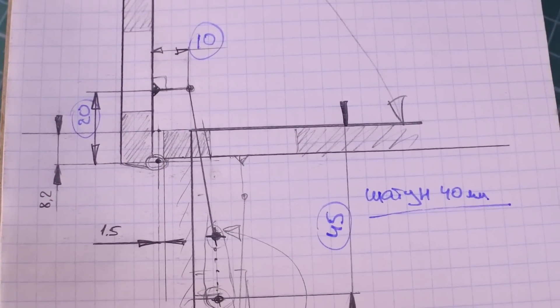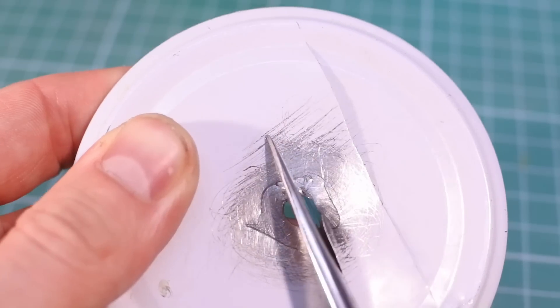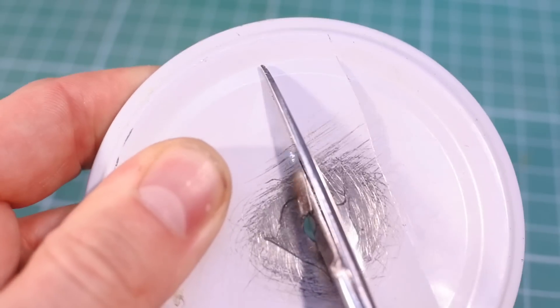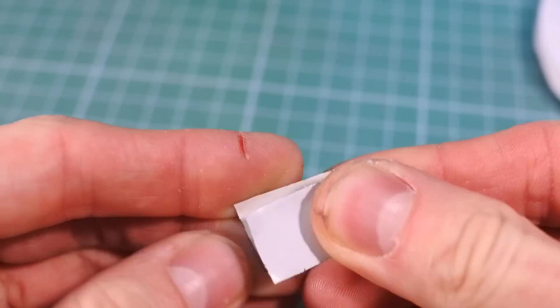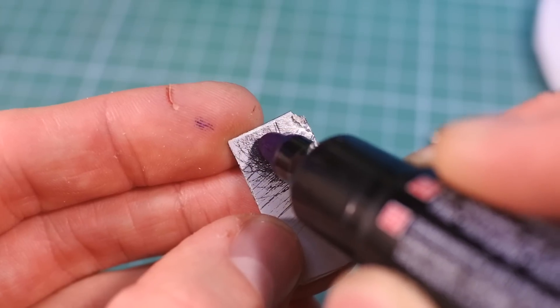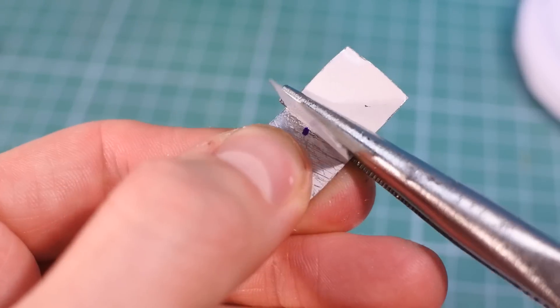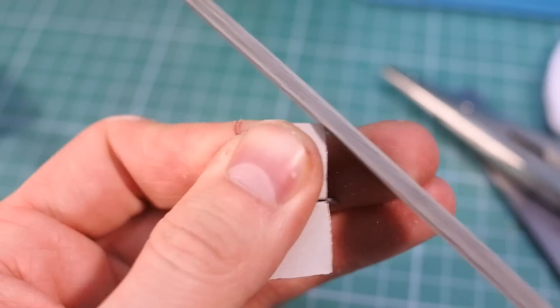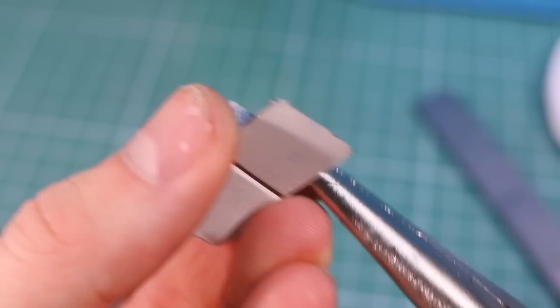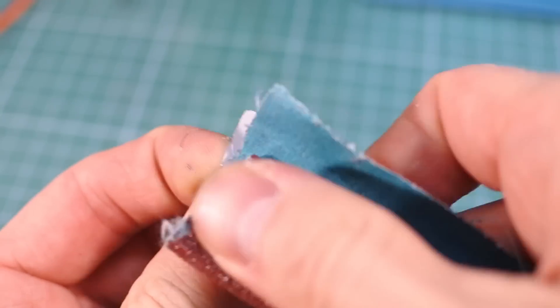I will make a hinge from tin can metal. Just cut off a strip, fold it and mark an axis. Bend some legs and make a hole for the shaft. I just glue it to the cap, so I process both surfaces with abrasive and glue.